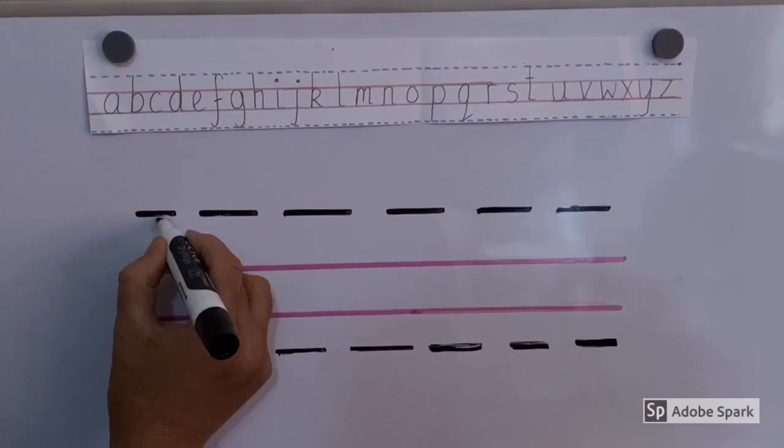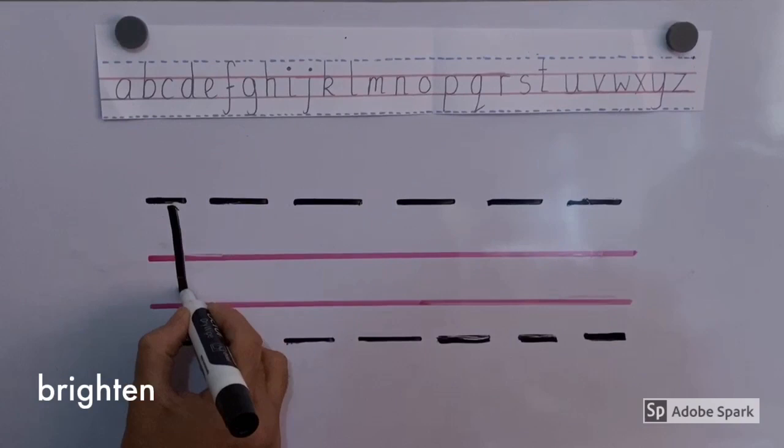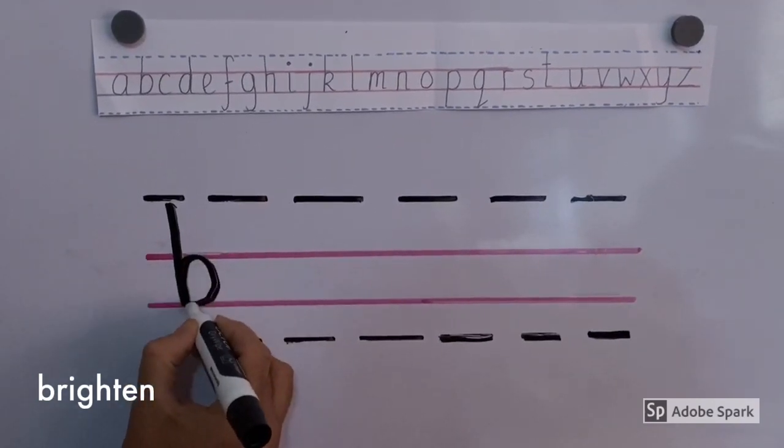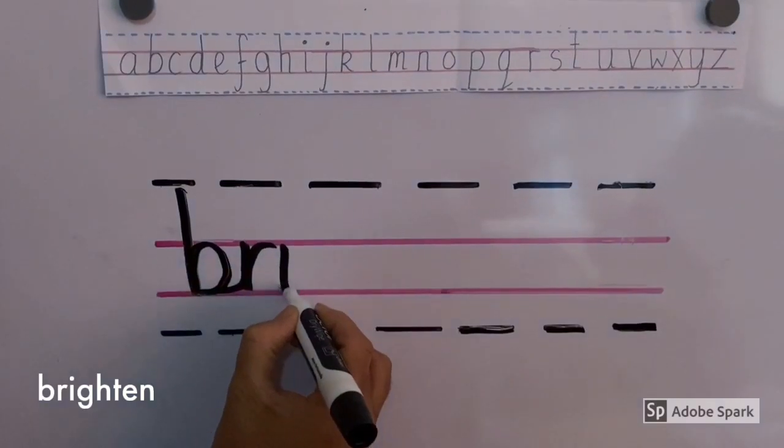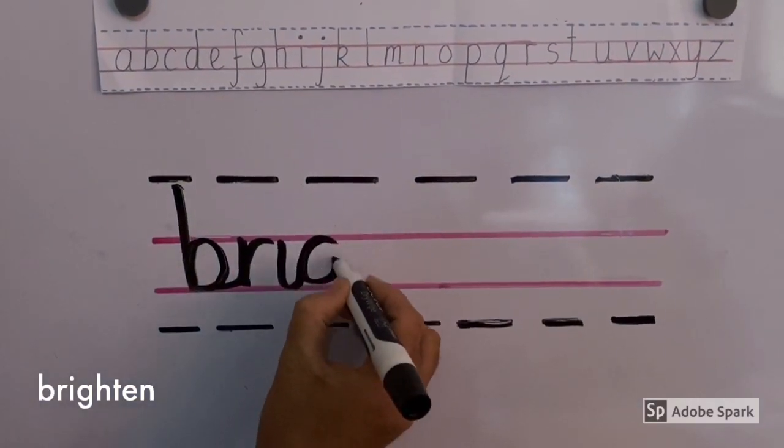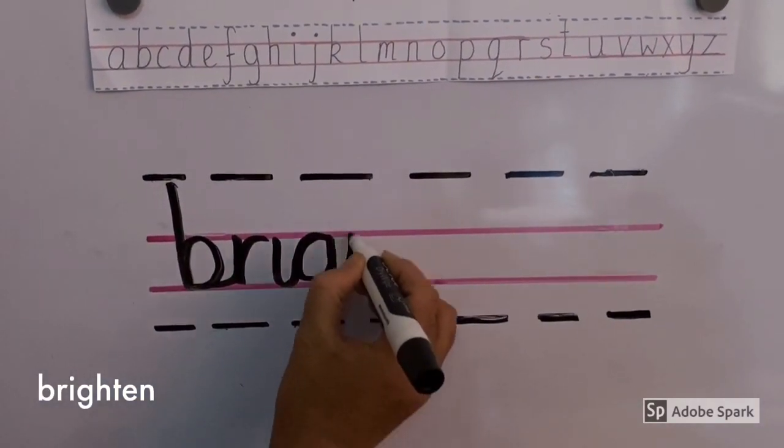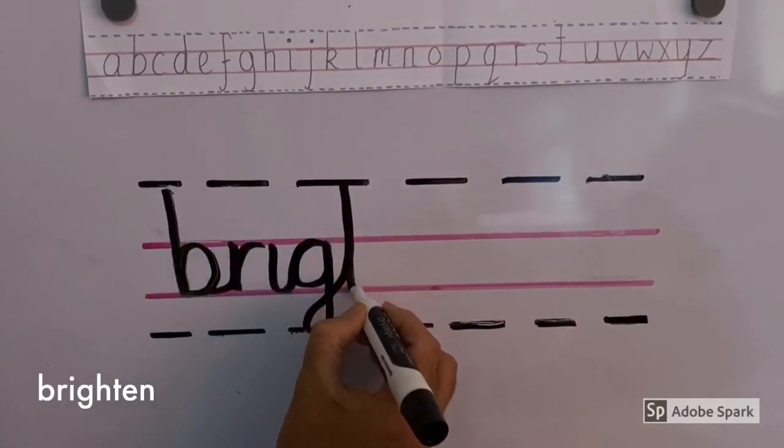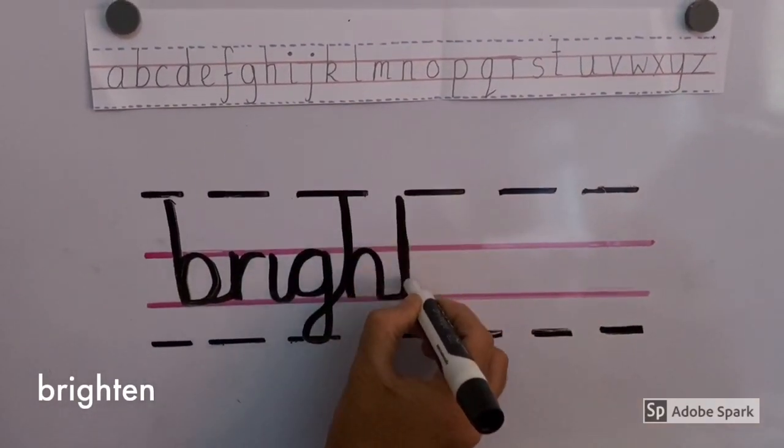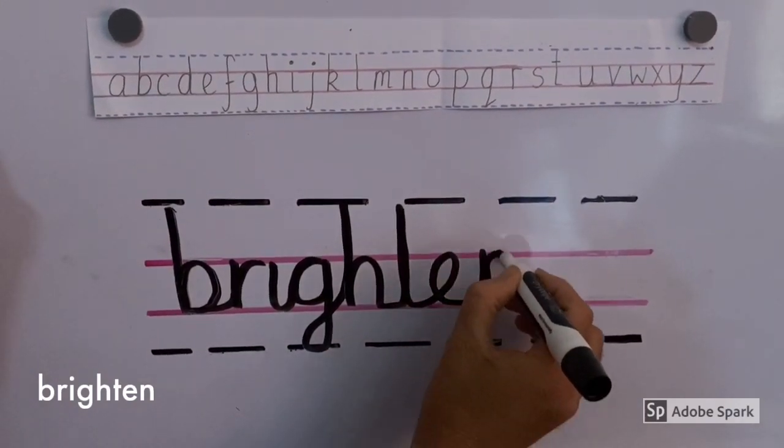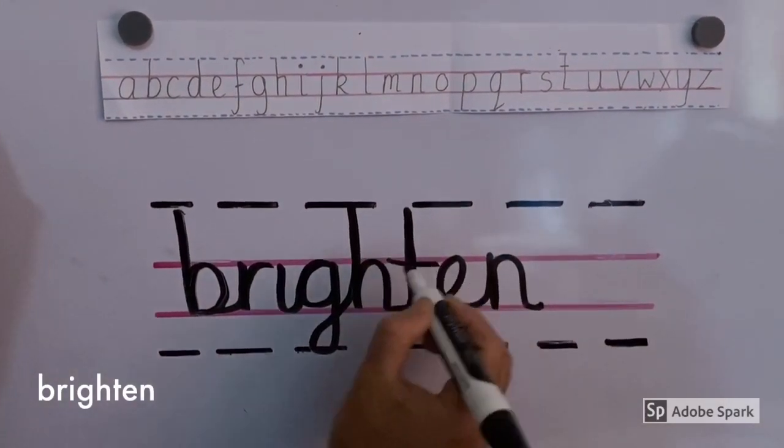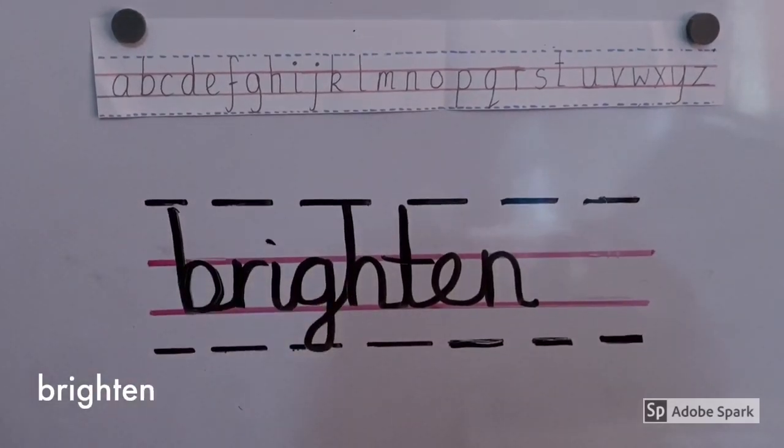Brighten. B, R, I, G, H, T, E, N. Brighten. Brighten means to make or become more light. Brighten.